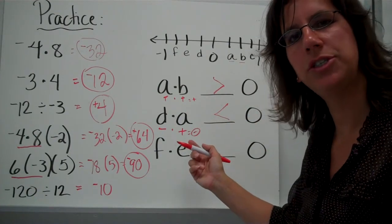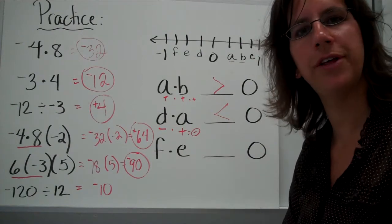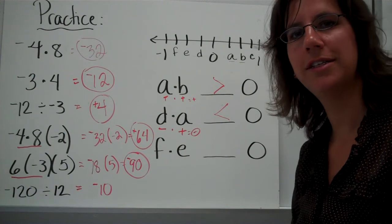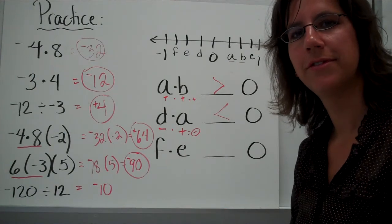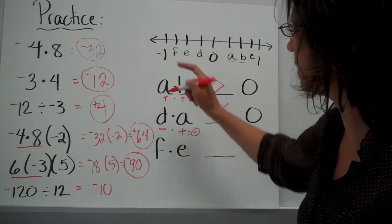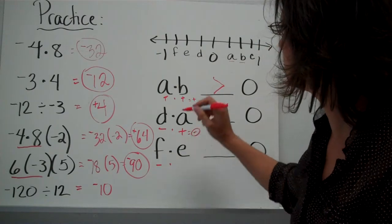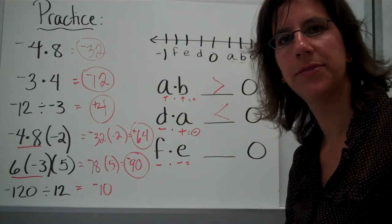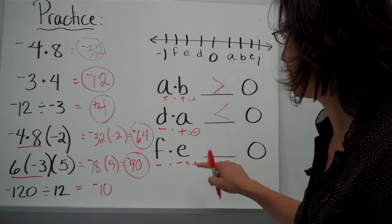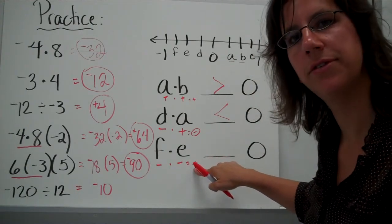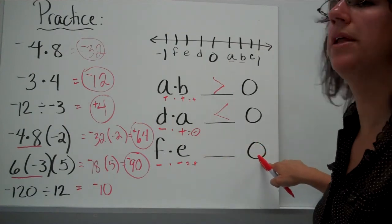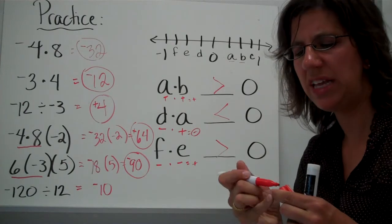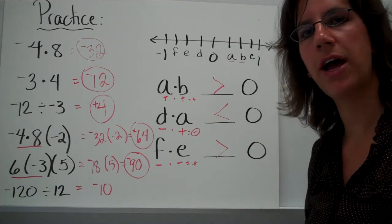If you didn't really understand the questions and you want to try this one on your own, pause your video before I answer this question and then come on back. Otherwise, let's go ahead and take a look at it. F is a negative. And we're going to multiply it by another negative, E. A negative times a negative is positive. So our answer's going to be positive. Does that mean it's greater than, less than, or equal to 0? Greater than.